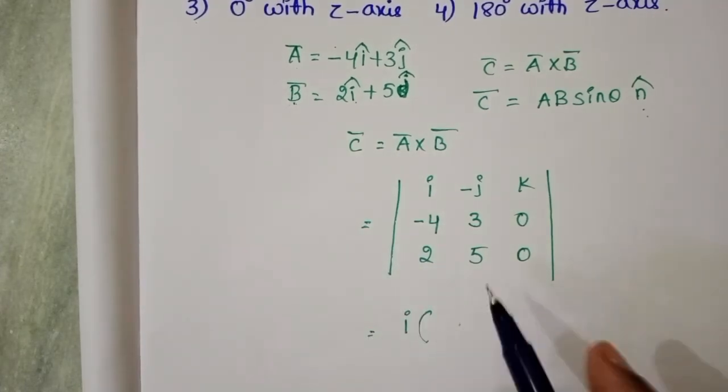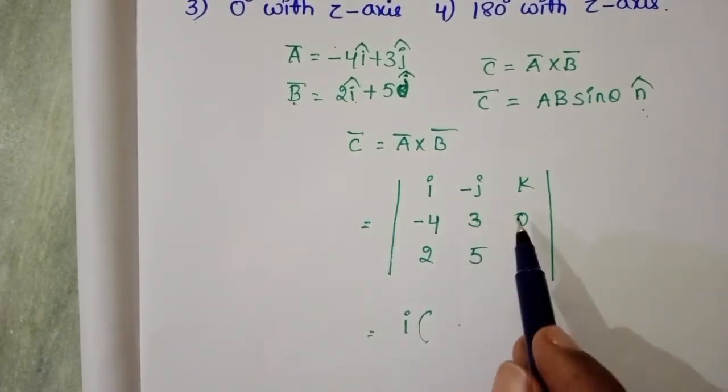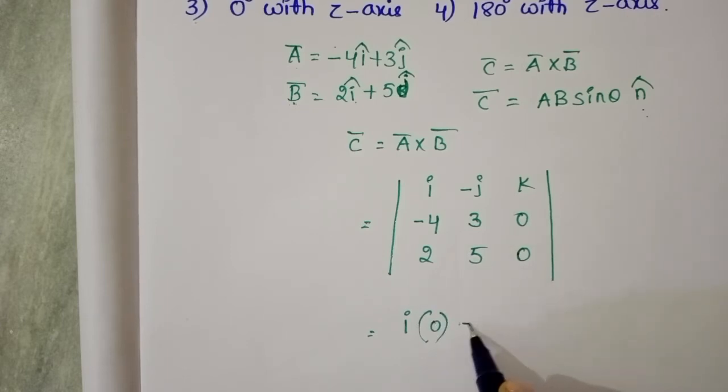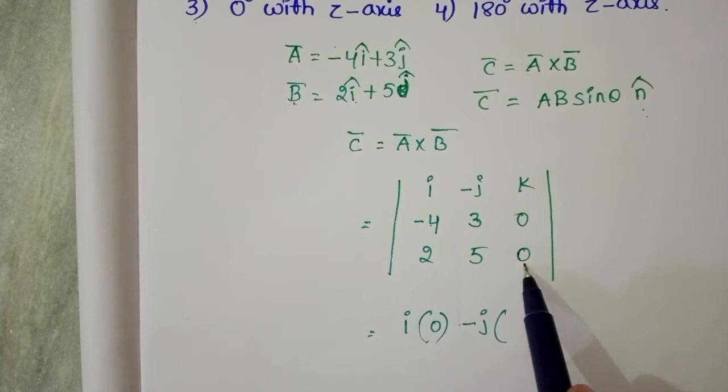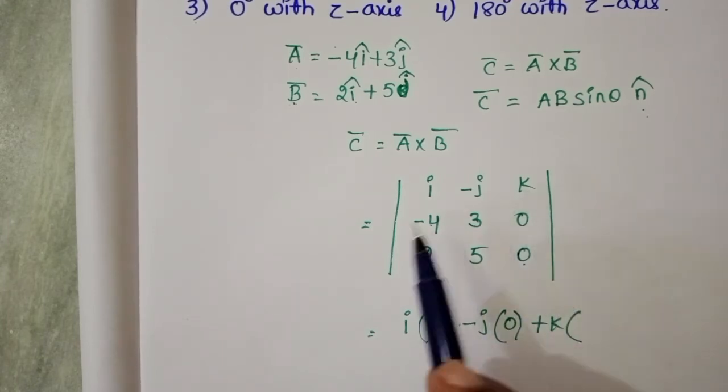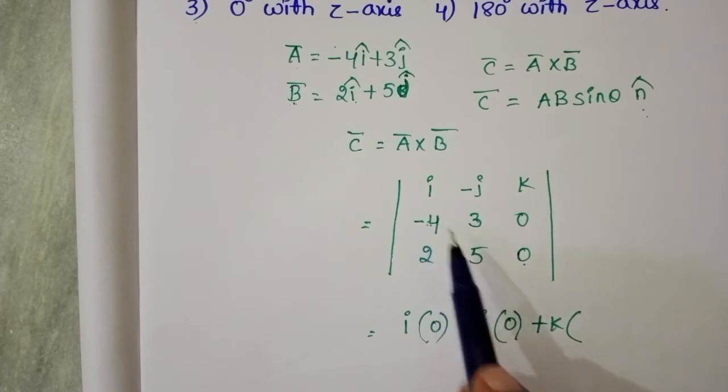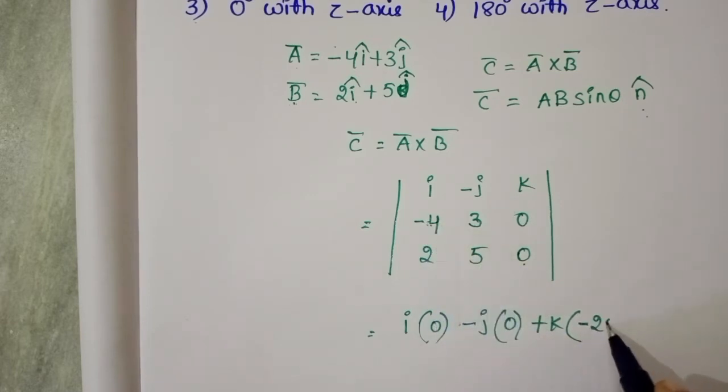î(0) - ĵ(0) + k̂(-4 × 5 - 3 × 2) equals k̂(-20 - 6) equals -26k̂.